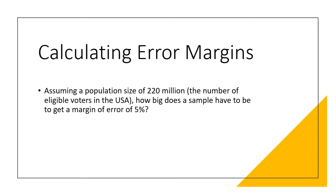Assuming a population size of 220 million, how big would a sample have to be to get a margin of error of 5%? Go ahead and pause and think about it. The correct answer, based on the best statistics we have, is 384. That's dramatically lower than most people think. To survey the entire pool of eligible U.S. voters and get a 5% error margin, all you need is 384 respondents — as long as those respondents constitute something resembling a random sample.